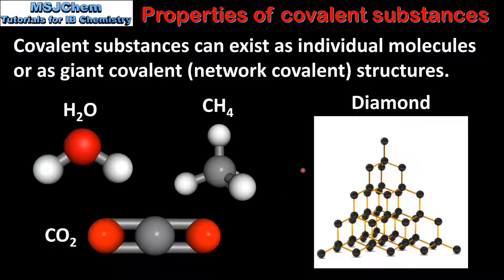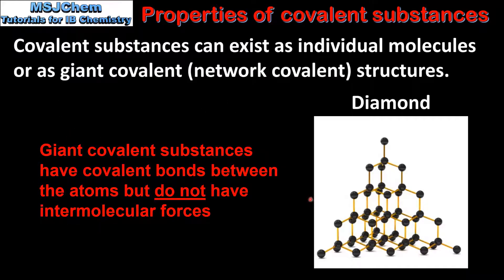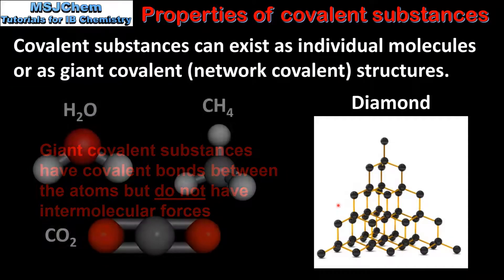On the right we can see an example of a giant covalent structure, which is diamond. A giant covalent structure is a three-dimensional structure in which the atoms are bonded by covalent bonds. Unlike molecular compounds, giant covalent structures do not have fixed numbers of atoms. The number of atoms is determined by the size of the substance. Because they do not form molecules, giant covalent structures do not have intermolecular forces. This is one of the reasons why the properties of giant covalent structures are different to molecular compounds.